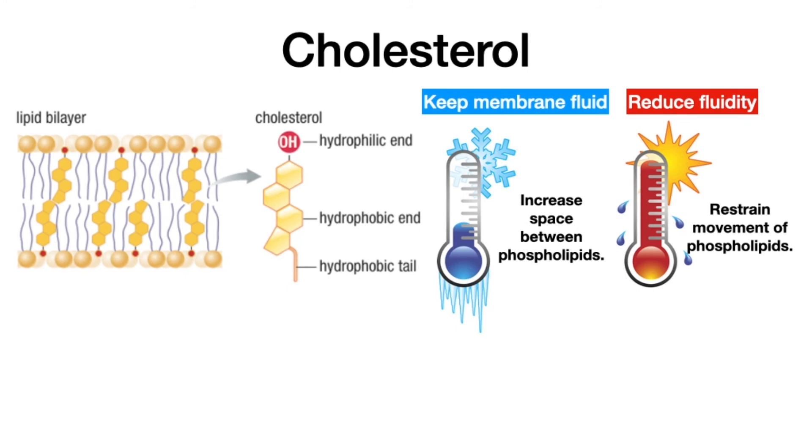At lower temperatures, cholesterol increases the space between phospholipids, which keeps the membrane fluid. While at higher temperatures, cholesterol restrains the movement of phospholipids, reducing the fluidity of the membrane, essentially keeping it from melting.